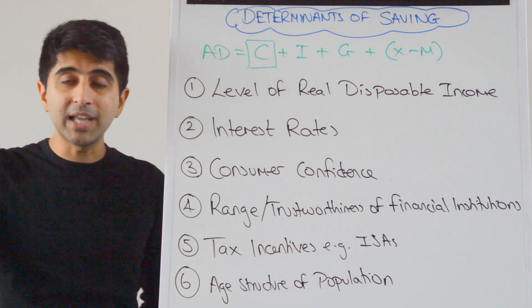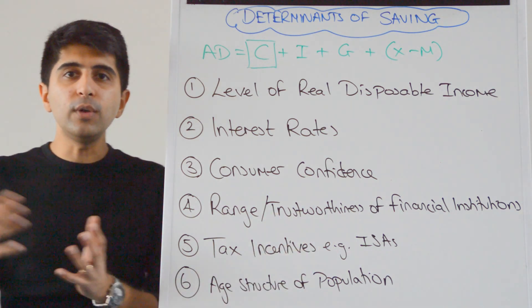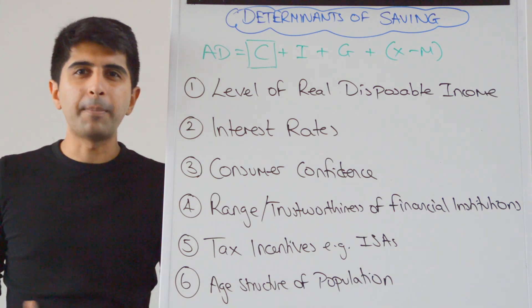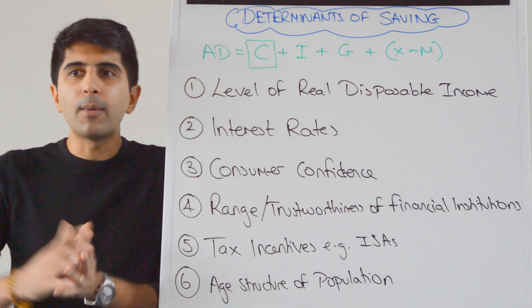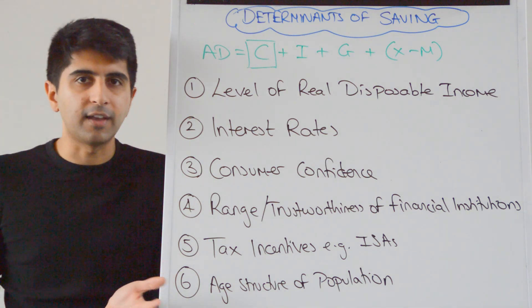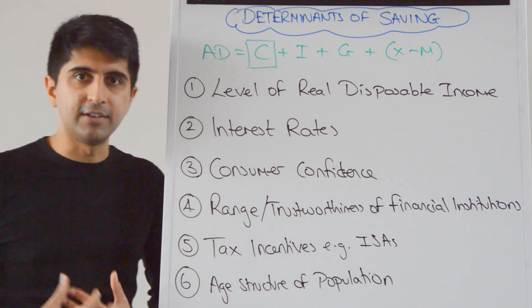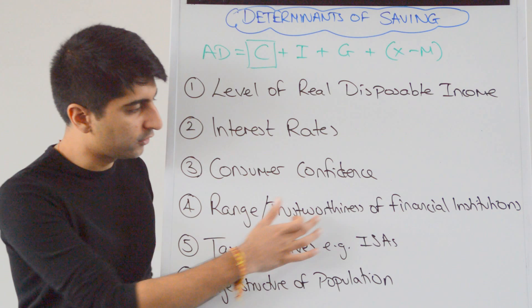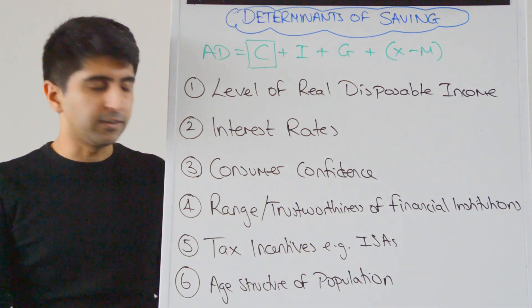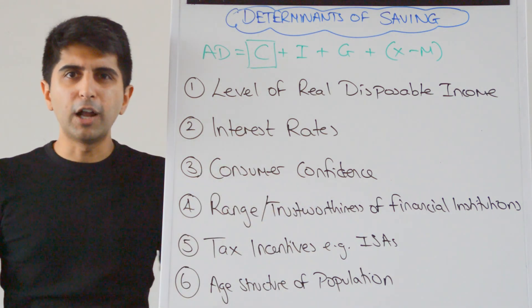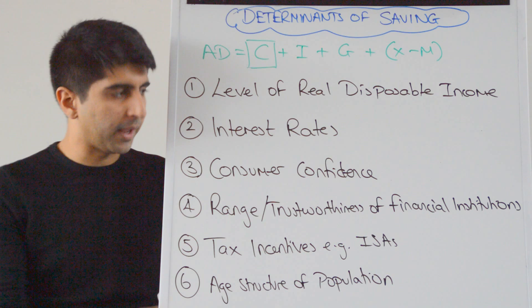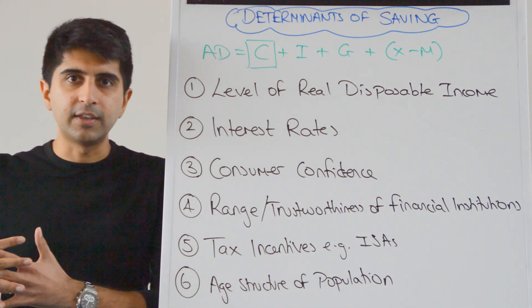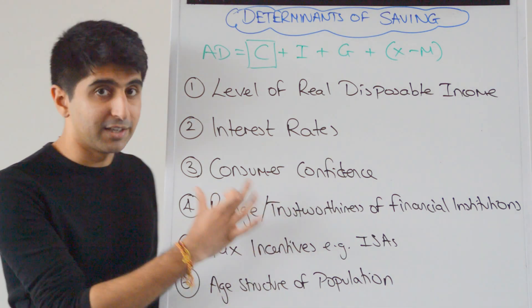Another key barrier is just education in developing countries. Do individuals or families know about the benefits of saving? About how a bank operates? About what interest rates are? Maybe not. And that could be a barrier to saving as well. But all of these reasons, a poor range of financial institutions, corrupt banks, non-trustworthy banks, unreliable banks, unofficial banks, can all prevent saving taking place, especially in developing countries. You see this a lot.